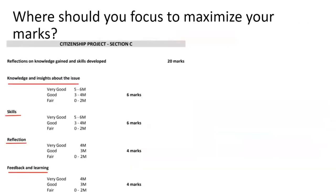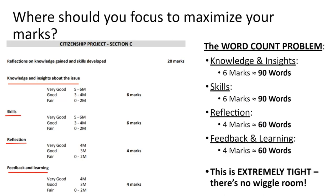The marking scheme is 20 marks overall: 6 marks, 6 marks, 4 marks, 4 marks — and these are effectively the headings you should write under: 'Knowledge and Insights,' 'Skills,' 'Reflection,' and 'Feedback and Learning.' How much should you write? With 300 words and 6 marks being about 90 words, the 4-mark sections are about 60 words each. If you go a little over in one area you'll have to pay it back later, so be extremely disciplined with your word count — there's no wiggle room.